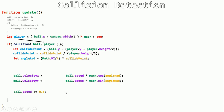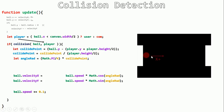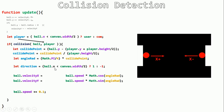When the user's paddle hits the ball, it should go right (positive velocityX). When the computer hits it, it should go left (negative velocityX). Since cos always returns a positive value, create a direction variable: if ball.x < canvas.width/2, direction is 1 (positive); otherwise direction is -1 (negative). Multiply velocityX by direction to get the correct horizontal direction.